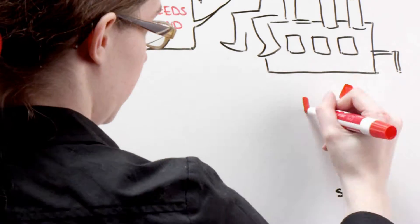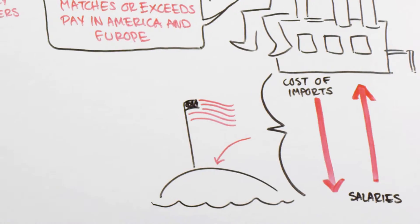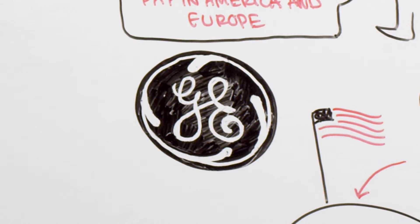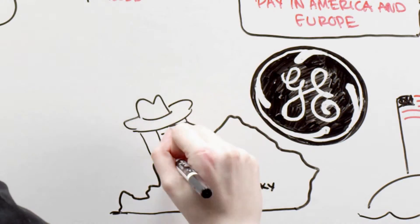Rising salaries, plus the cost of transporting goods to the US market, have pushed some companies to reshore some of their production in America. That includes GE, which last year moved the production of washing machines and other appliances from China to a plant in Kentucky.